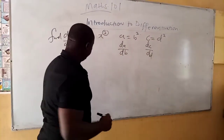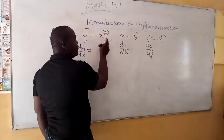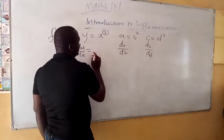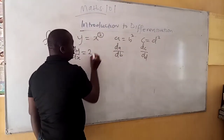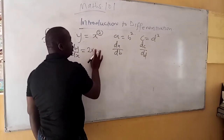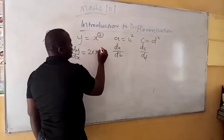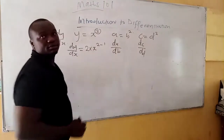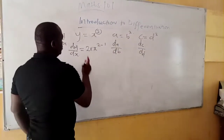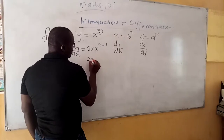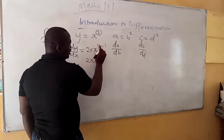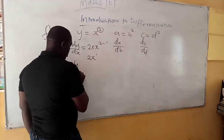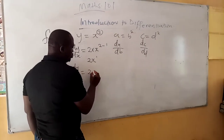Rule number two: multiply the power by the coefficient, which is x. So you bring the power down and multiply it by x, then minus 1 from the power, so you have 2 minus 1. If you do it like this, you will now have 2x, and 2 minus 1 gives you 1. So dy/dx is equal to 2x.